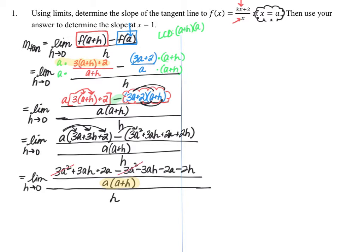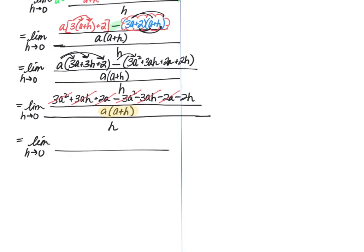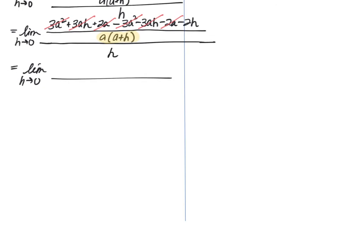So we're hoping that we have some terms subtract out. And we have a lot. Look at this. 3a squared subtracts out. 3ah subtracts out. 2a and 2a subtract out, which is fabulous. So really, we are left with the limit as h approaches 0. I'm going to scoot up a bit here. So this is all over h. We really end up with just negative 2h and then over that common denominator, a times a plus h. And then that whole thing is divided by h.